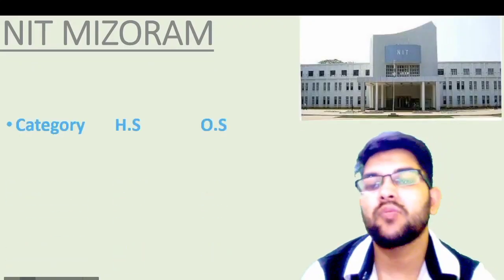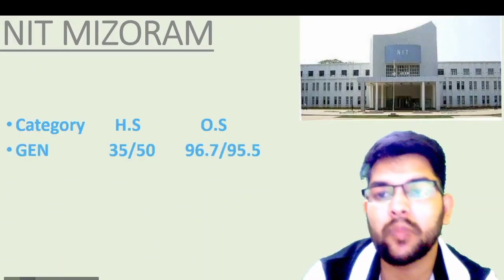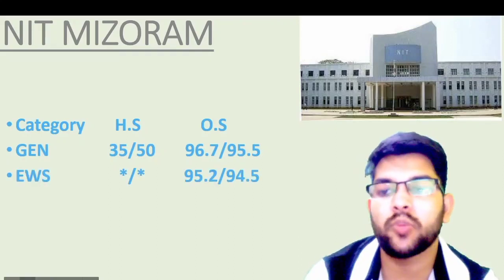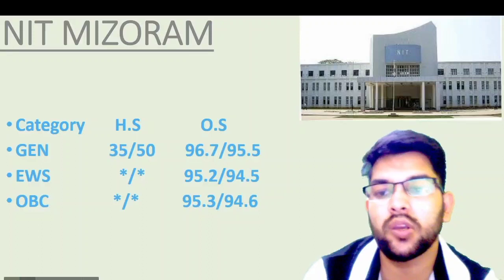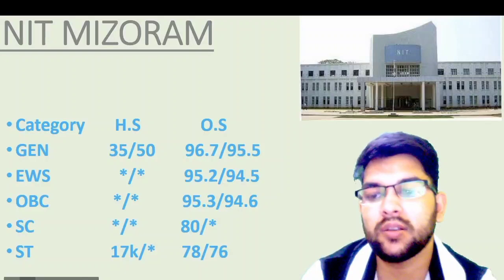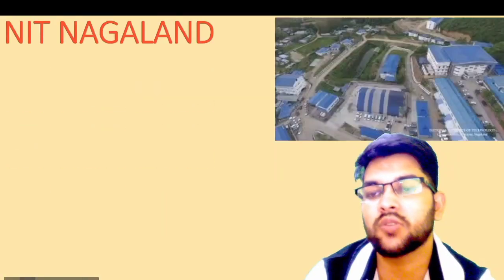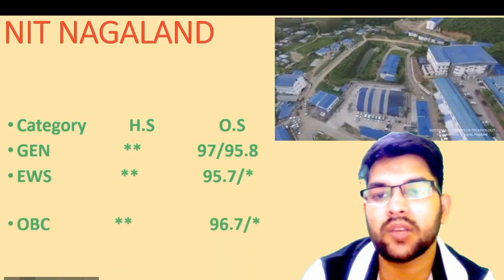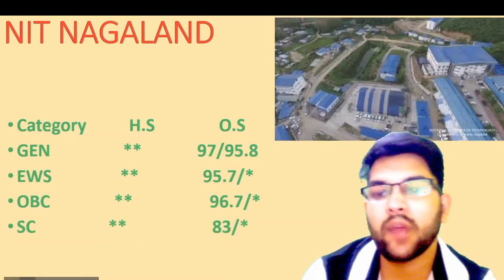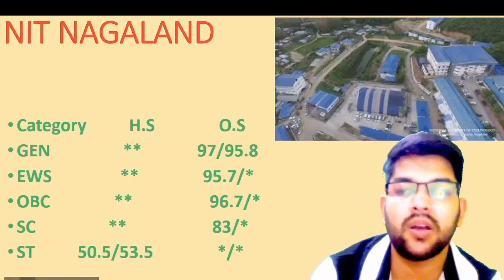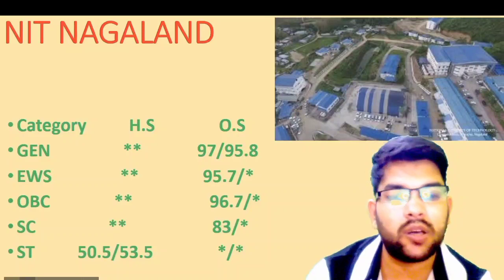Next is NIT Mizoram. For General home state, a very low percentile of 35 is required, while for other state it is 96.7 due to high competition. EWS: 95.2 and 95.3. SC: 80. ST: 78 percentile. Then NIT Nagaland: General — 97; EWS — 95.7; OBC — 96.7; SC — 83; ST — 50.5 and 53.5 for home state. Other state cutoffs apply only for other state seats.